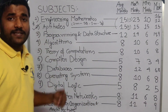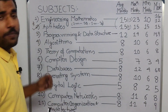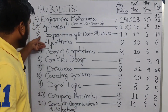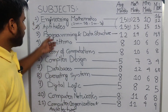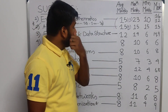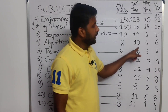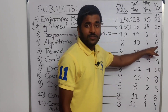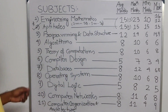After Programming and Data Structures, you should study Algorithms, because there is a direct link between the two subjects. Algorithms builds on what you learned in Data Structures. The average marks for Algorithms is 8, maximum marks asked is 10, minimum is 6, and the mode — most frequent value — is 6 marks.